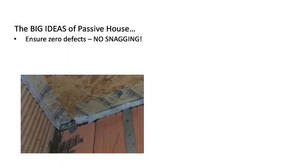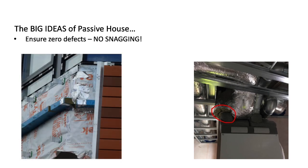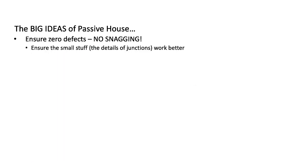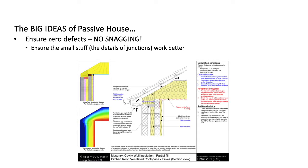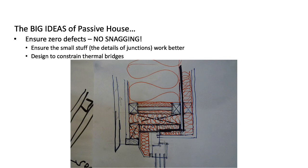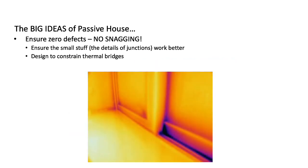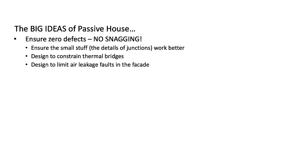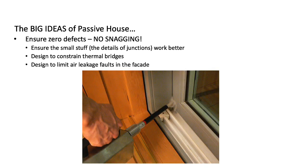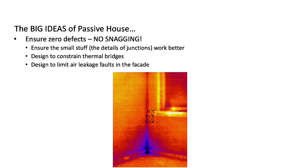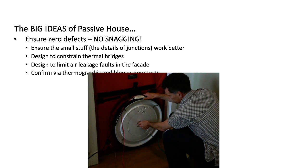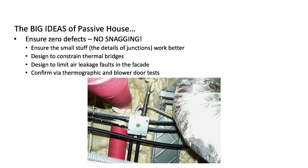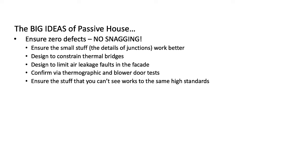I often think of passive house as a design-build ecosystem with no snagging. The U-values in passive house are actually not all that different from other high-performance building schemes. In passive house, we want to ensure that the small stuff works better — the details of junctions. We want to design so as to constrain the occurrence of thermal bridges and limit air leakage faults in the facade. We want to test these aspects of the building by way of thermographics and blower door tests. We also want to ensure that the stuff we don't normally see works to the same high standard as the parts of the building we are more immediately aware of.